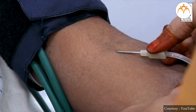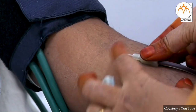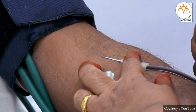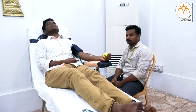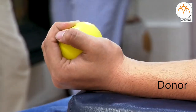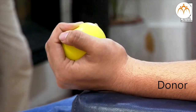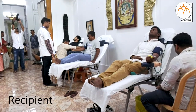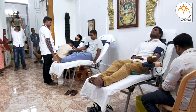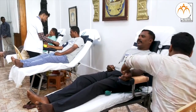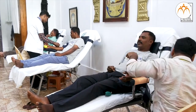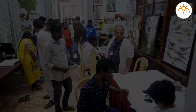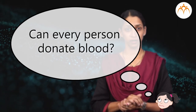For this procedure, a blood sample from a healthy person is collected. This person is called a donor, and the one who needs the blood is a recipient. There is a specific way or method of collecting this blood. So, can every person donate blood?